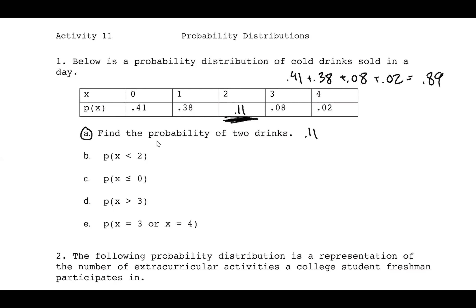Part B: probability that X is less than two. That means x = 0 or x = 1. P(0) + P(1) = 0.41 + 0.38 = 0.79.